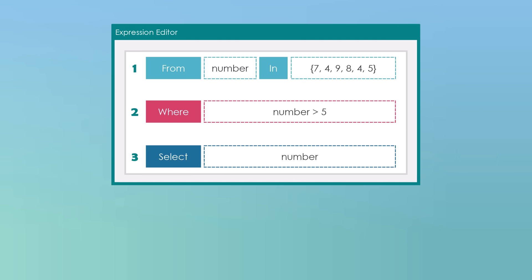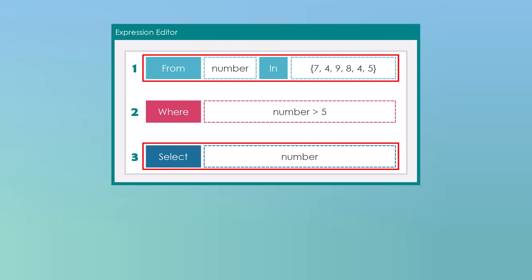That's all about query syntax. Query syntax is one of three ways to write a LINQ query, and its syntax is similar to SQL. We use a clause then an expression to do something. We normally set from at the beginning and select at the end. Between both clauses we can use the other clauses. Each clause can be used once or more than once, depending on the query we want to write.